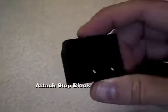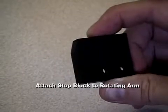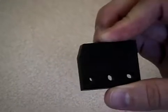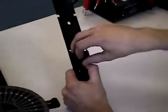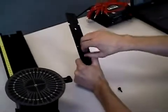This is a stop block for the arm and you'll notice that one corner is notched off so we're going to attach it to the bracket like this. This is the underneath side of the arm.